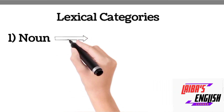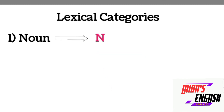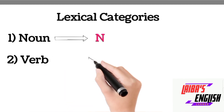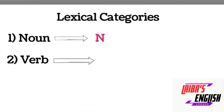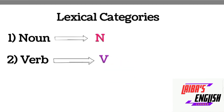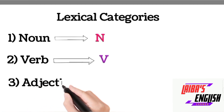The first category is noun, and we will represent noun by N. We all know that a noun is a name of a person, place, or thing. The second lexical category is verb, which is denoted by V. A verb is an action verb or a state of being — for example, run, climb, ride, etc.